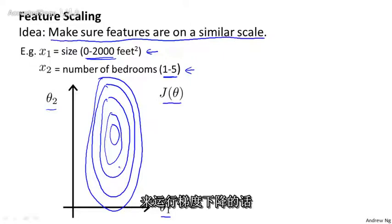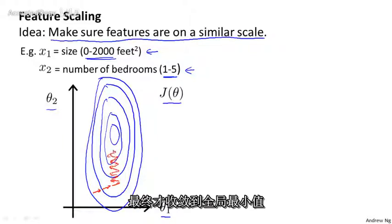And if you run gradient descent on this sort of cost function, your gradients may end up taking a long time and can oscillate back and forth, and it can take a long time before it can finally find its way to the global minimum.